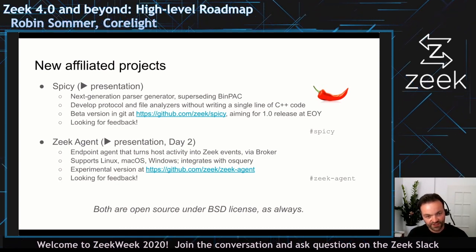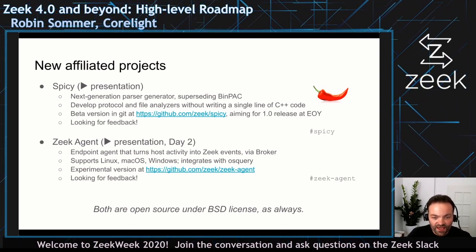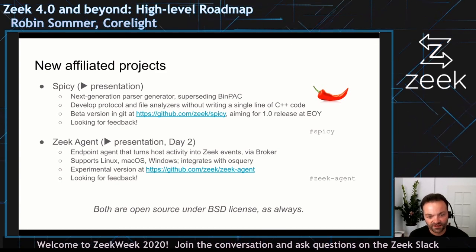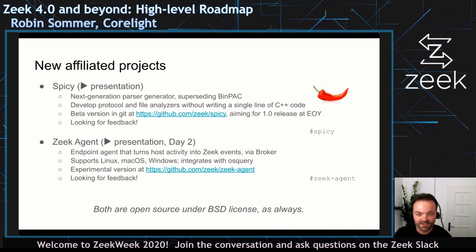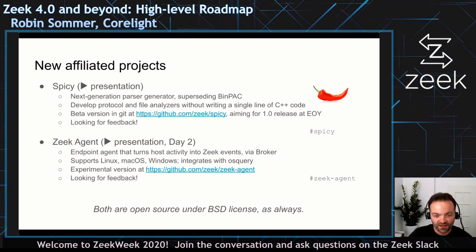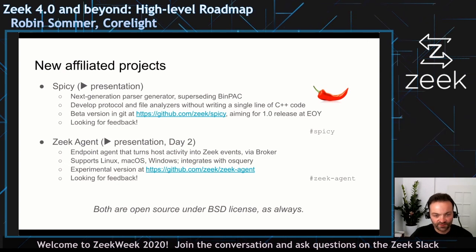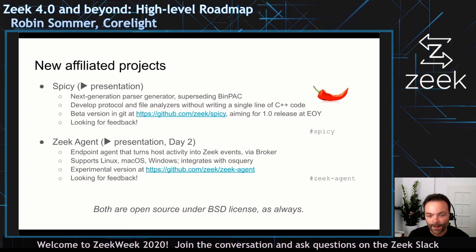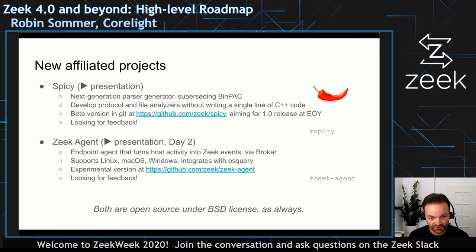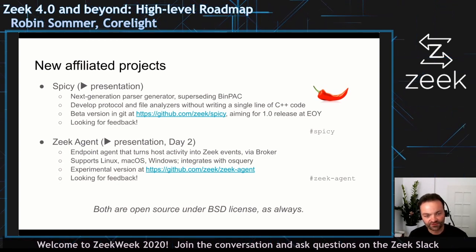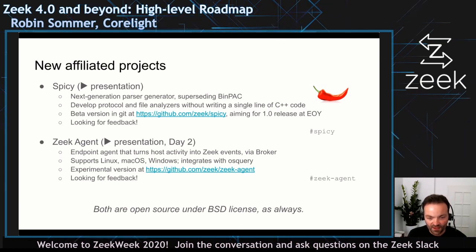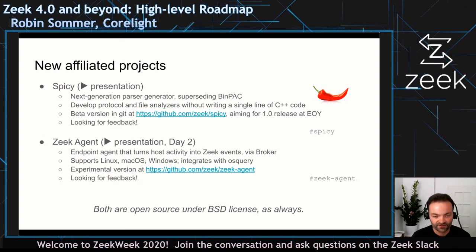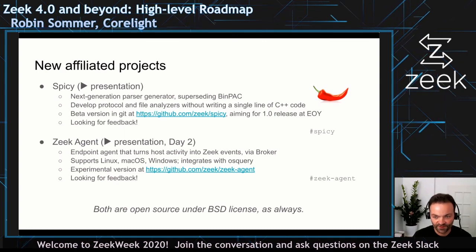The Zeek agent — which we heard about yesterday from Vergy — is an endpoint agent that for the first time makes host-level activity available to Zeek via broker by sending events into the scripting layer. This supports Linux, macOS, and Windows to different degrees, and integrates with OSQuery to tap into all that interesting information OSQuery makes available. Both SPICY and Zeek agent are BSD licensed and have dedicated Slack channels for feedback.